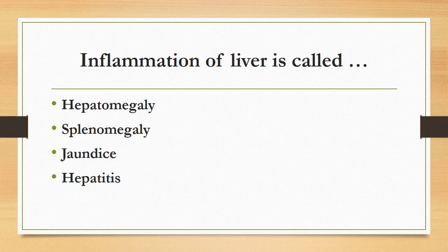Inflammation of the liver is called: hepatomegaly, splenomegaly, jaundice, or hepatitis? The correct answer is hepatitis. Hepatitis is inflammation of the liver. Hepatomegaly is an enlarged liver. Splenomegaly is a term used to denote an enlarged spleen. Jaundice is a condition in which the skin, whites of the eyes, or mucous membranes turn yellow.